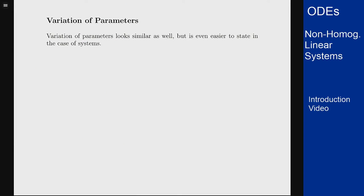Variation of parameters on the other hand works pretty much the exact same way it did before but it's going to almost look better for the systems case than it did for the second order equations. The idea is that we find the general solution to the homogeneous problem